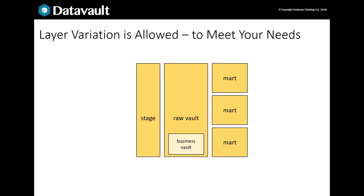This is the classic layer structure, but it's not that commonly used today. In the classic layer structure, data files are loaded to staging before load to the raw vault, then the data is truncated. But what happens to the original files? A data lake layer is commonly added to persist these feed files and to assemble streams as well.